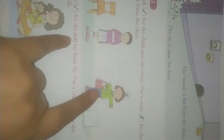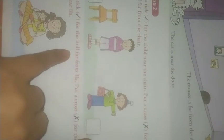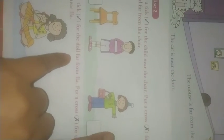And after that, put a cross for the child far from the chair. This child is far from the chair. So you have to put a cross in this box.